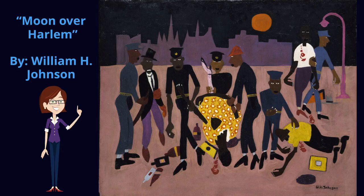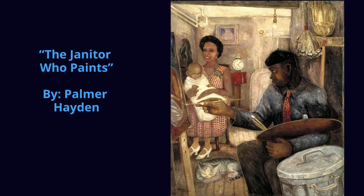Palmer Hayden created 'The Janitor Who Paints,' a protest-type painting depicting his own social and economic standing. His use of perspective in the composition identified his liking for abstraction in simple forms. This painting was to simply bring attention to the more negative status of being 'the janitor who paints,' and not being known as 'the artist.'